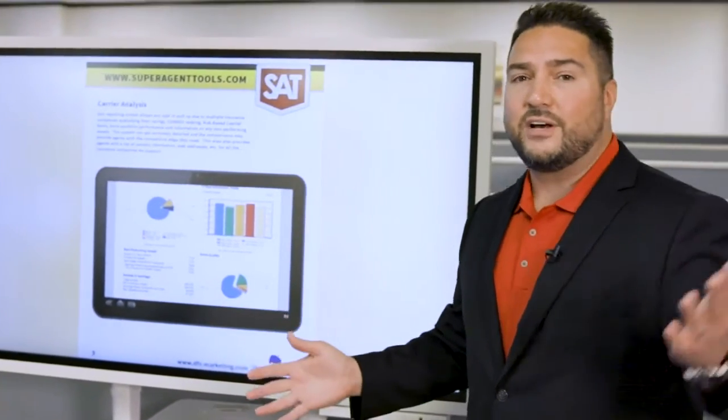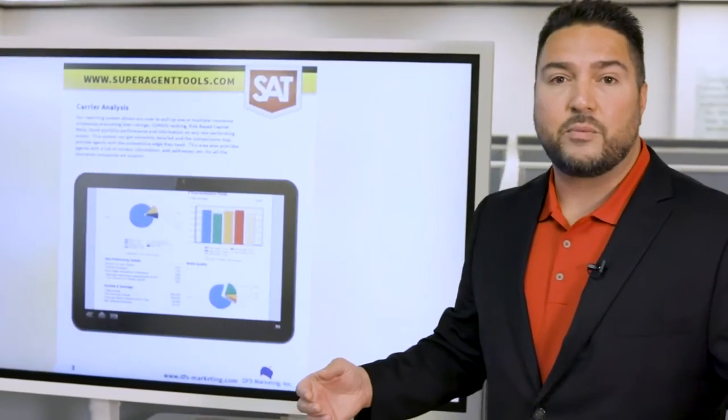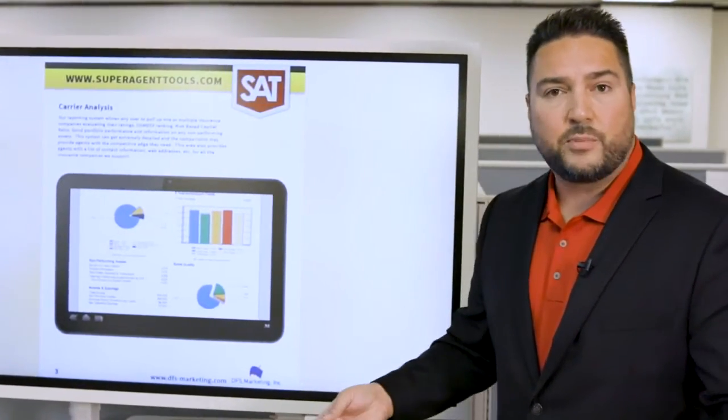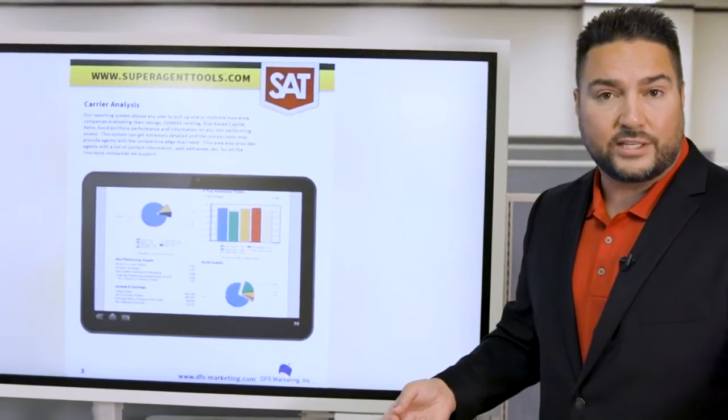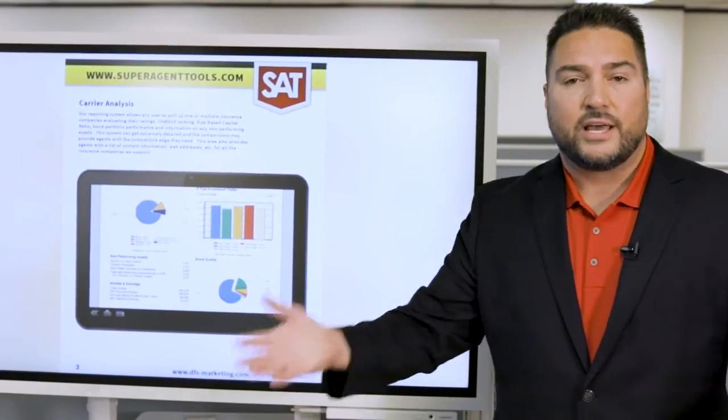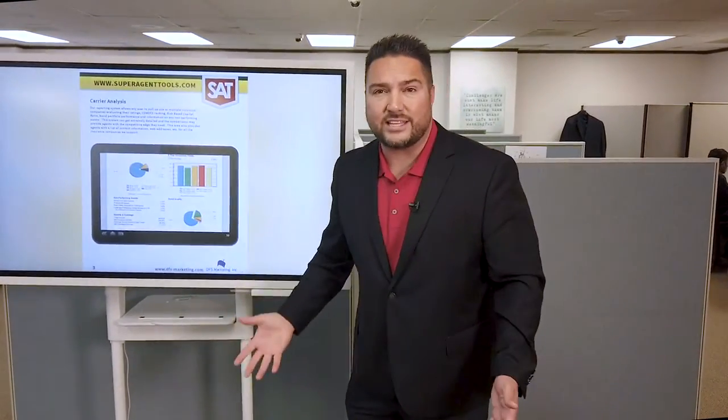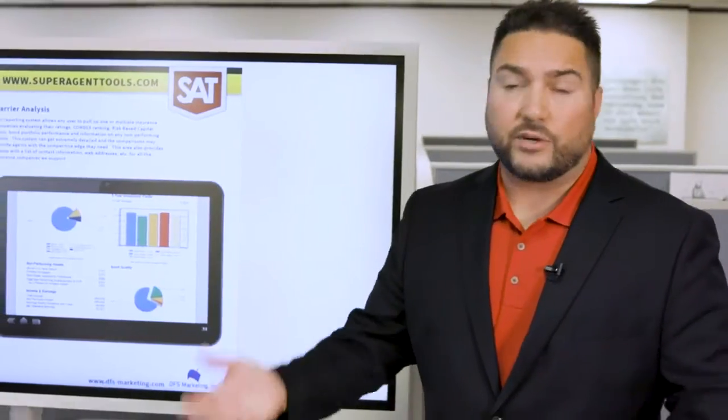It's great for competition. If an agent is presenting a B-rated company, you're able to go in and show this chart on a piece of paper and show this is the carrier that you're looking at, and this is my carrier. It's able to provide some really good carrier analysis just to get that edge above your competition.